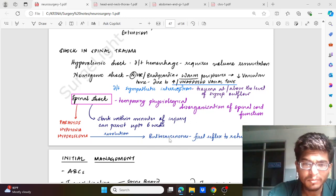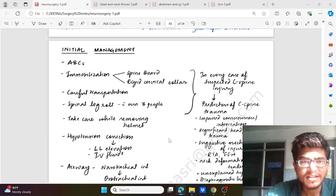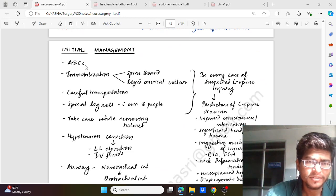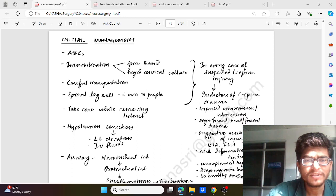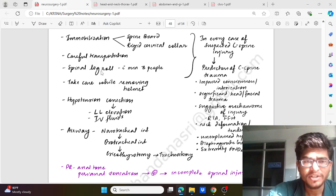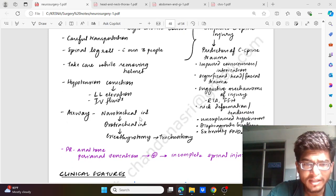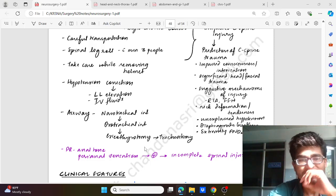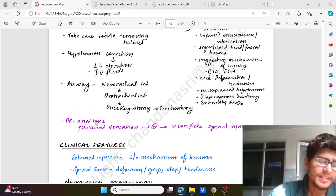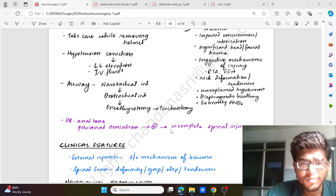Considering the basic management: initial management - airway, breathing, and circulation which has to be taken care of; immobilization of the spine through spine board and rigid cervical collar; careful transportation with spinal log roll with minimum three people to help; take care while removing the helmet so that no further injury is added. For hypotensive cases, we have to go for leg elevation and IV fluid should be added. For airway, we can go for nasotracheal intubation or tracheal intubation, cricothyrotomy, or tracheostomy in the increasing order of necessity.